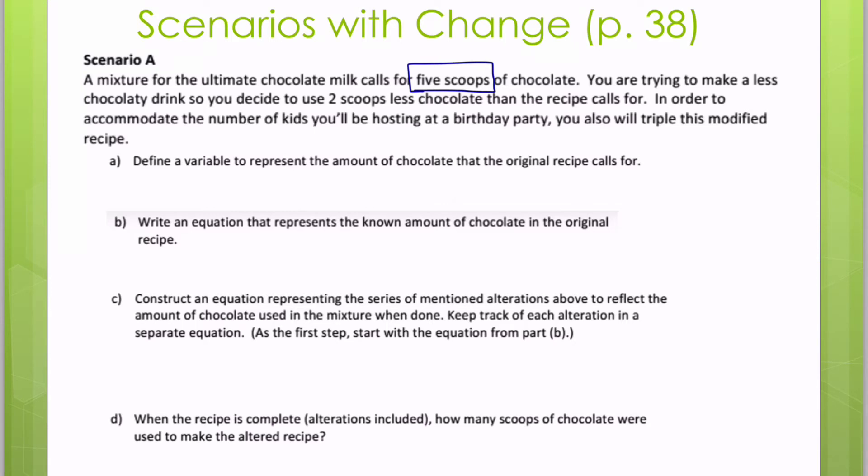You're trying to make a less chocolatey drink. So you decide to use two scoops less chocolate than the recipe calls for. In order to accommodate the number of kids you'll be hosting at a birthday party, you're also going to triple this modified recipe.